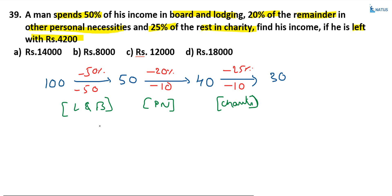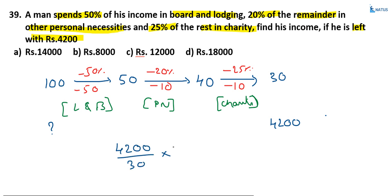Suppose a person starts with 100 rupees. After spending on lodging, personal necessities, and charity, he is left with 30. According to this question, the amount left is 4200. So the initial amount is 4200 by 30 into 100. Simplifying, this is equal to 140 times 100, giving 14000. Option A is the correct answer.